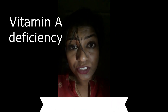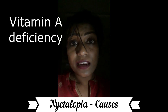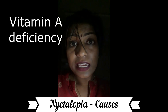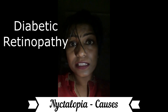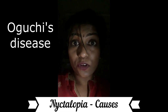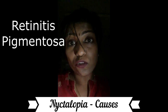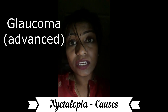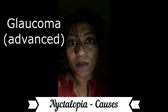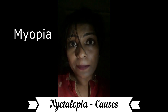A is for vitamin A deficiency. D is for diabetic retinopathy. O is for Oguchi's disease. R is for retinitis pigmentosa. Then GMP: G is for advanced glaucoma, M is for myopia.